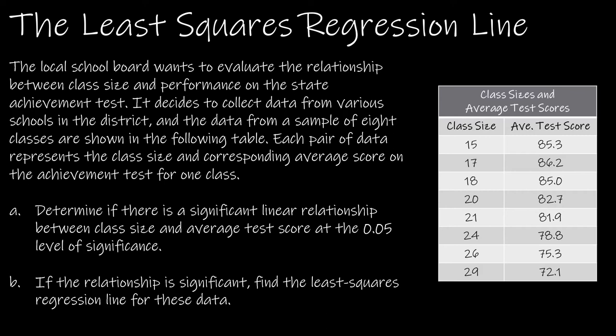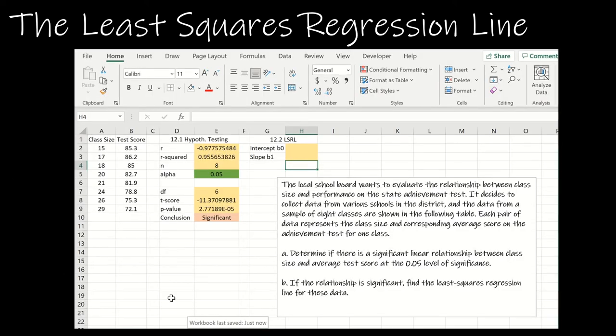If it is significant we're going to find the least squares regression line for the data. Let's take a look at this question now. This data should look familiar to us – we've already used it in section 12.1 when we were learning about R and R squared and how to determine if something is statistically significant. Now what we want to do is if it's significant go ahead and find the least squares regression line for the data.